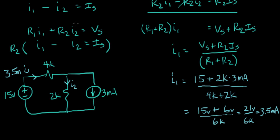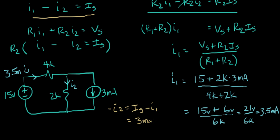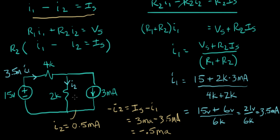Now we have one unknown current and need to find the other. From the current equation, I2 equals Is minus I1, which is 3 milliamps minus 3.5 milliamps, giving I2 equals negative 0.5 milliamps. Let's put boxes around both answers: I1 equals 3.5 milliamps and I2 equals negative 0.5 milliamps.